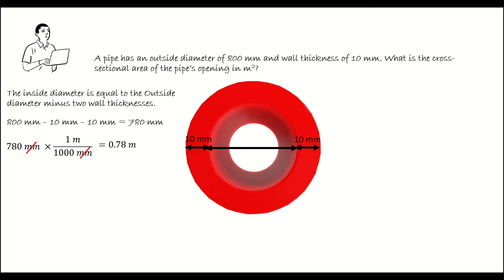Using this dimension, we can calculate the cross-sectional area of the opening of the pipe. The area of a circle is pi r squared, where r, the radius, is the diameter divided by 2. 0.78 meters divided by 2 is 0.39 meters.